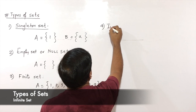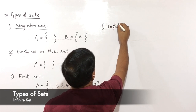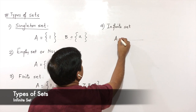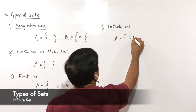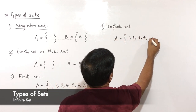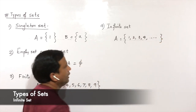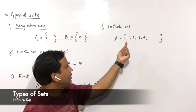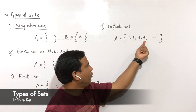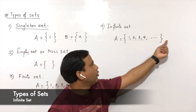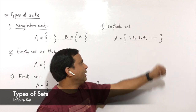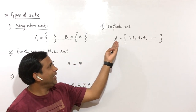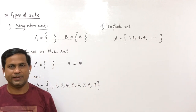The fourth type is the infinite set. A set with non-termination is said to be an infinite set. If you observe, A is a set with 1, 2, 3, 4 and so on — it is not getting terminated. Therefore you can say that set A is an infinite set.